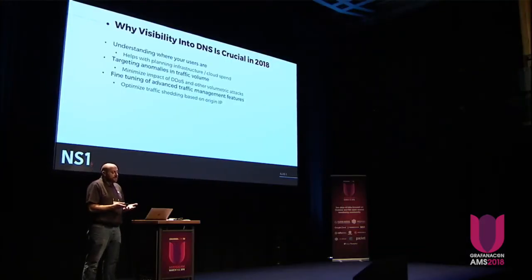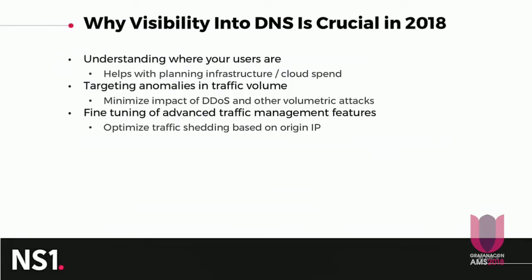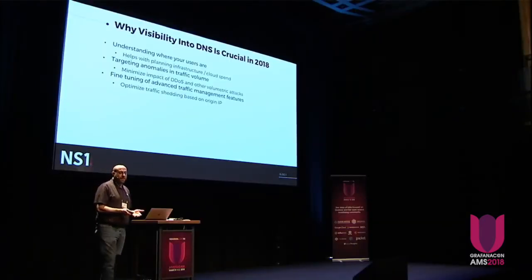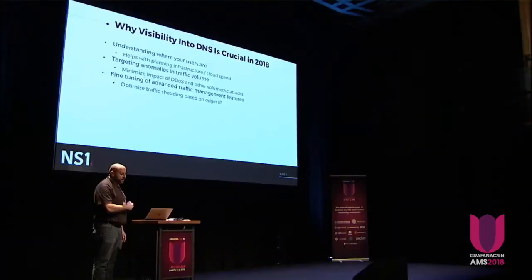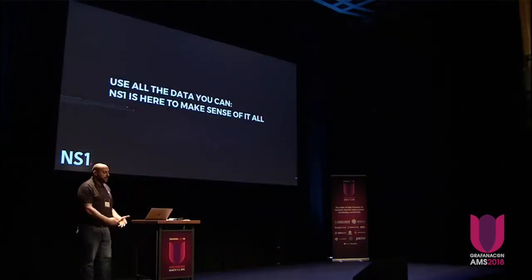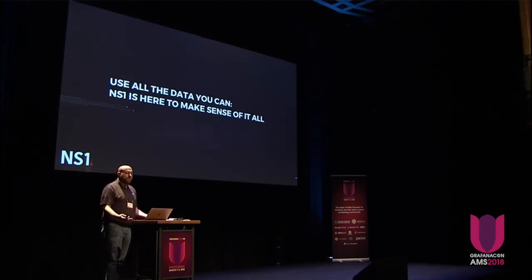Specifically focusing on DNS, having visibility into the state of this essential layer of the stack is critical to the optimization and tuning of how queries are answered. Thinking about this differently — where are your users? That's pretty critical when figuring out where to set up a cloud instance or stand up a new data center. Targeting anomalies in traffic patterns is also key, since usually the first sign of a DDoS attack is elevated queries against a certain record. And of course, fine-tuning any advanced logic you might have set up, be it load balancing or the filter chain, which I'll get into in a minute. Really, the reason I'm here today is to tell you all: use all the data you can, and we're here to help you make sense of it.